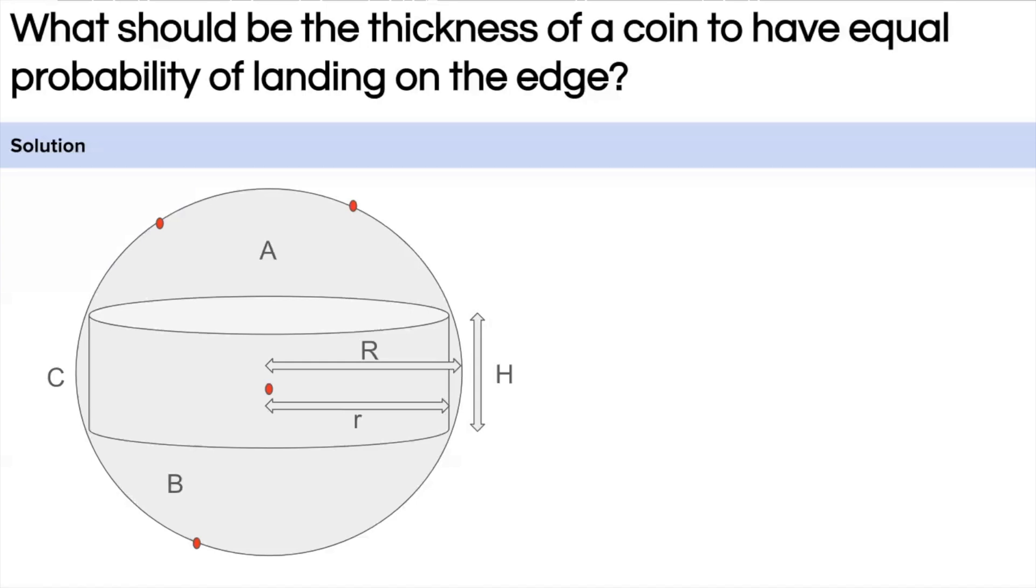So here what we do, taking the probability via area. If we wanted to have equal probability, the area of the A part should be equal to C, should be equal to B. So the area of the upper sphere, the lower sphere, and the curved sphere should be equal, right?